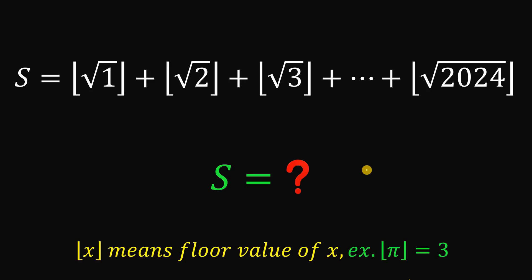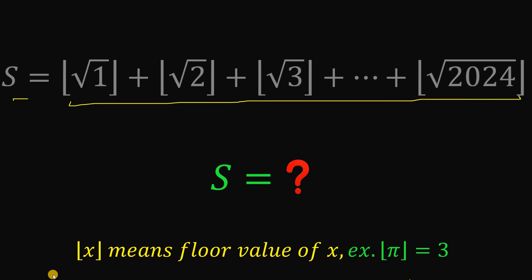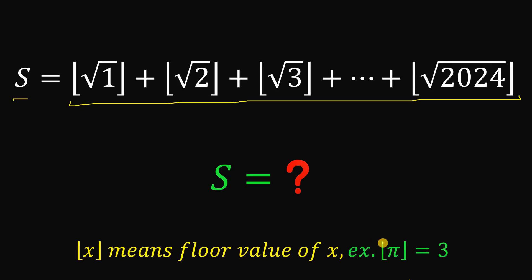Can you solve this math challenge? Here's the question: given this equation, S is equivalent to this value, wherein this symbol means floor value of x. For example, floor of pi — we know pi is 3.14, so floor of pi is simply equivalent to 3. The floor value is the same thing as getting the greatest integer less than or equal to that number, which is why floor of pi is simply 3.